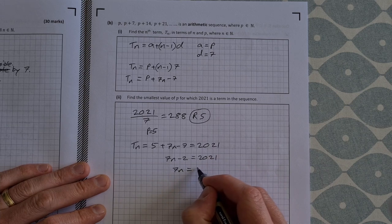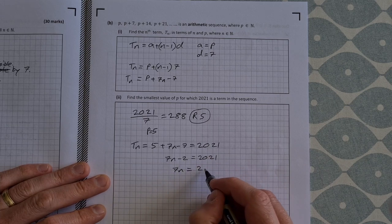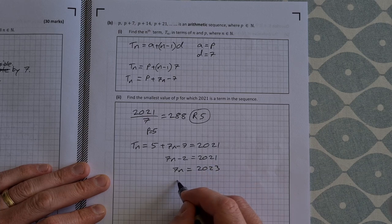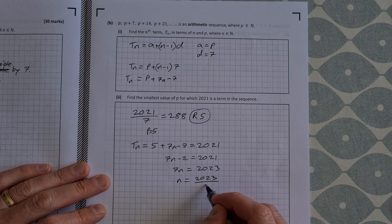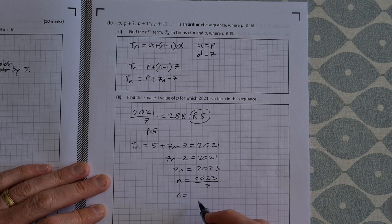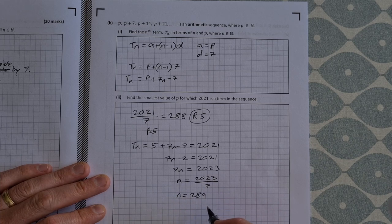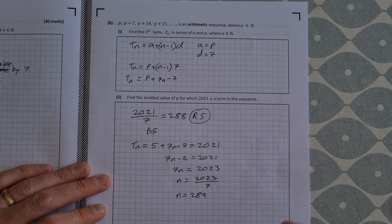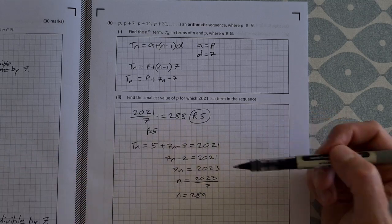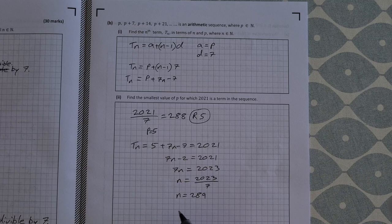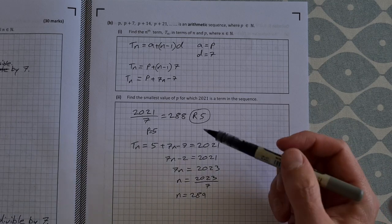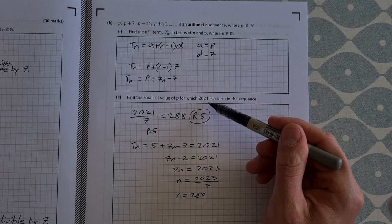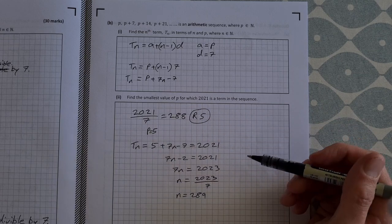7n is equal to 2021 plus 2, so 2023. n is equal to 2023 divided by 7. So n is equal to 289, which is actually one more than what we got there, 288, remainder 5. So the nth term, it's the 289th term, it is 2021 when p is equal to 5.